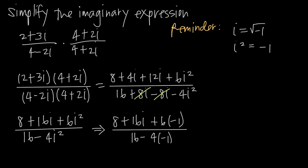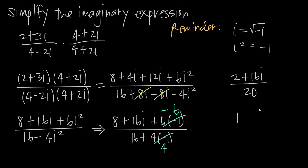6 times negative 1 gives us minus 6. And minus 4 times negative 1 gives us minus negative 4, which becomes plus 4. Combining terms in the numerator: 8 minus 6 is 2, so we have 2 plus 16i. In the denominator: 16 plus 4 is 20. Now we reduce to lowest terms — the 2, the 16i, and the 20 are all divisible by 2. So 2 divided by 2 is 1, 16i divided by 2 is 8i, and 20 divided by 2 is 10. The simplified answer is 1 plus 8i, all divided by 10, with no imaginary number in the denominator.